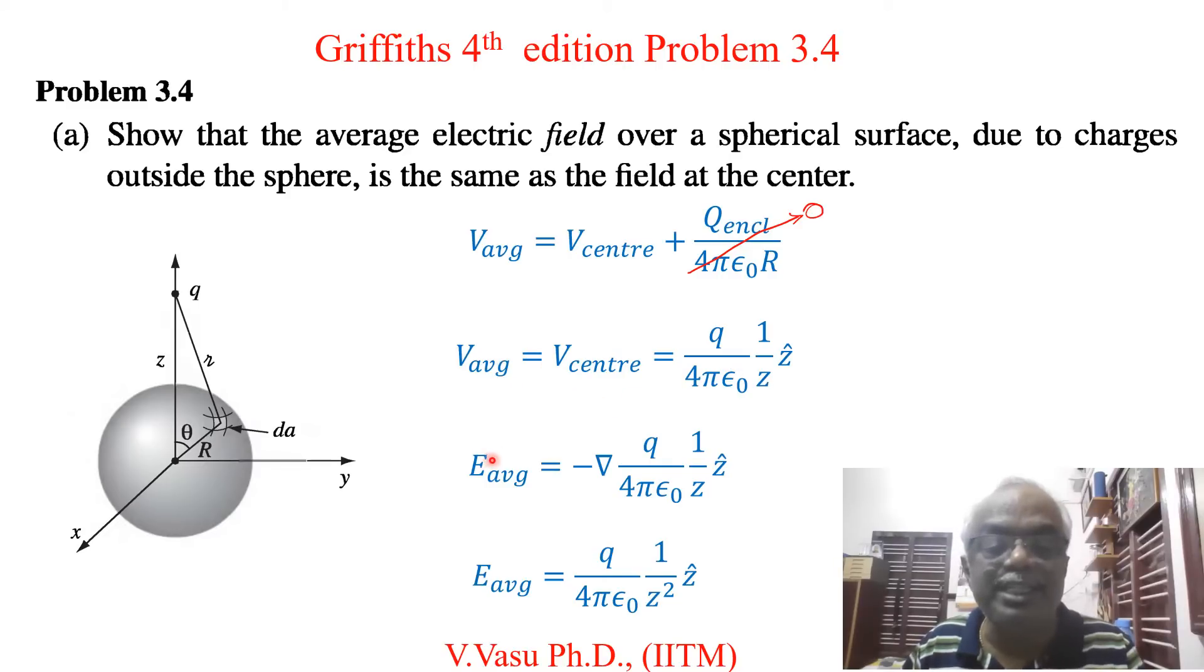We have to find the electric field, the average electric field which equals the negative gradient of potential. So this is -∇[q/(4πε₀z)].